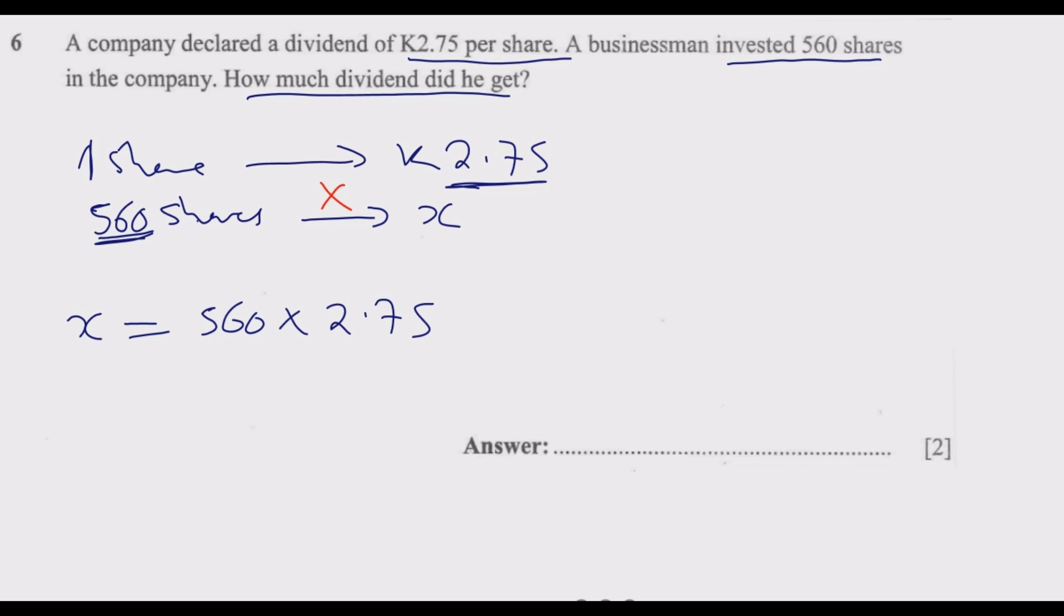Once you do that, we discover that X is equal to 560 multiplied by 2.75. And this is in kwacha. The answer will be in kwacha because these shares are going to cancel. So what is tricky here is just a matter of multiplication. When you're multiplying these numbers, what you do is take note of the decimal places. How many decimal places do you have? We have two decimal places here.